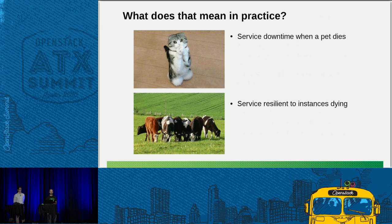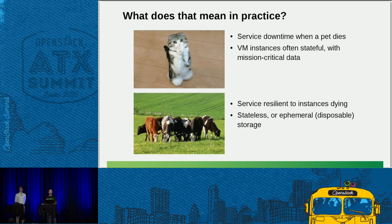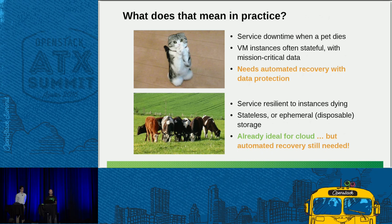In practice for compute node HA: when a pet dies you get service downtime because it's not designed to be resilient to failures. With cattle, if one fails the service still keeps running, albeit in a slightly degraded fashion. Pets are typically stateful with mission-critical data, whereas cattle are stateless or have disposable data. But both need some kind of automated recovery — for pets because of the critical data associated with them, and for cattle you still need automated recovery even though you don't need to worry about data loss.